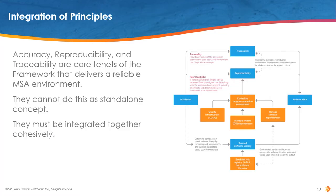Accuracy, reproducibility, and traceability are core tenets of the framework that deliver a reliable MSA environment. They cannot function as standalone concepts — they must be integrated together cohesively. This integration begins by identifying a program's output intended purpose. Processes to tag programs executed within the MSA environment with an intended use are established. Tools to scan programs or program logs should be developed to identify libraries used and assess risk level. Quality control processes should be established to ensure programs use appropriate software libraries.